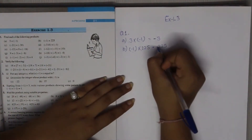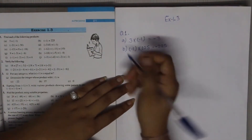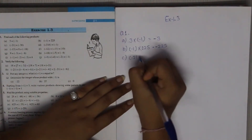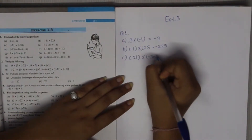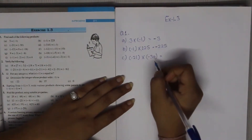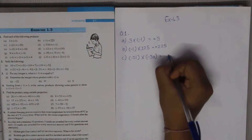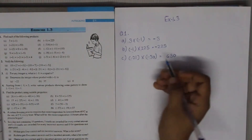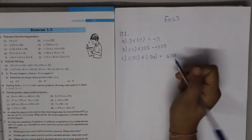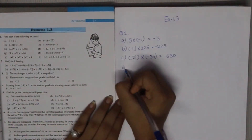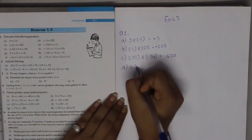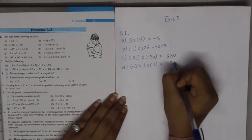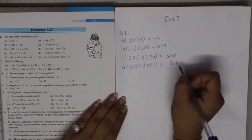If you multiply a positive and a negative number, you get a negative result. Next: minus 21 multiplied by minus 30. We multiply these numbers to get 630, and negative times negative gives a positive number, so the answer is 630.